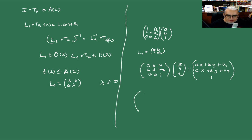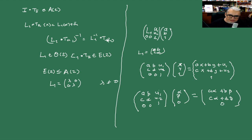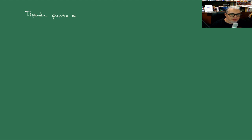Y si tomamos un punto al infinito (α, β, 0), la transformación afín da (Aα+Bβ, Cα+Dβ, 0). Si se fijan, dos cosas: el tipo de punto es un invariante afín, y la parte de la traslación no le afecta a los puntos al infinito, es decir, fija los puntos al infinito. El tipo de punto es un invariante afín.